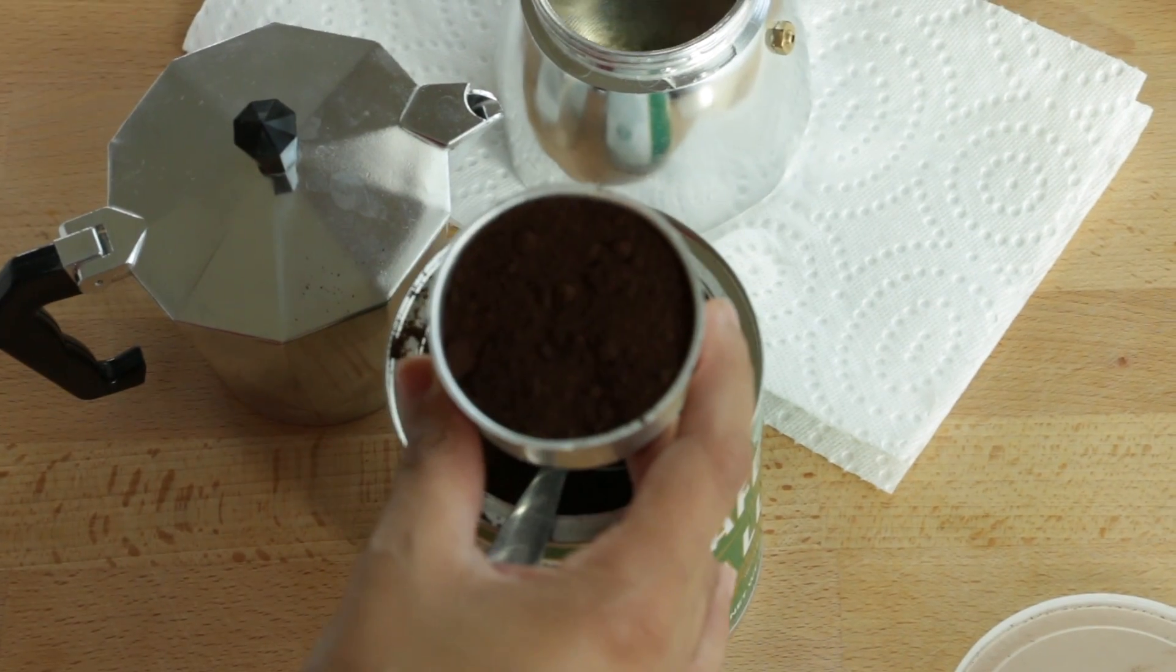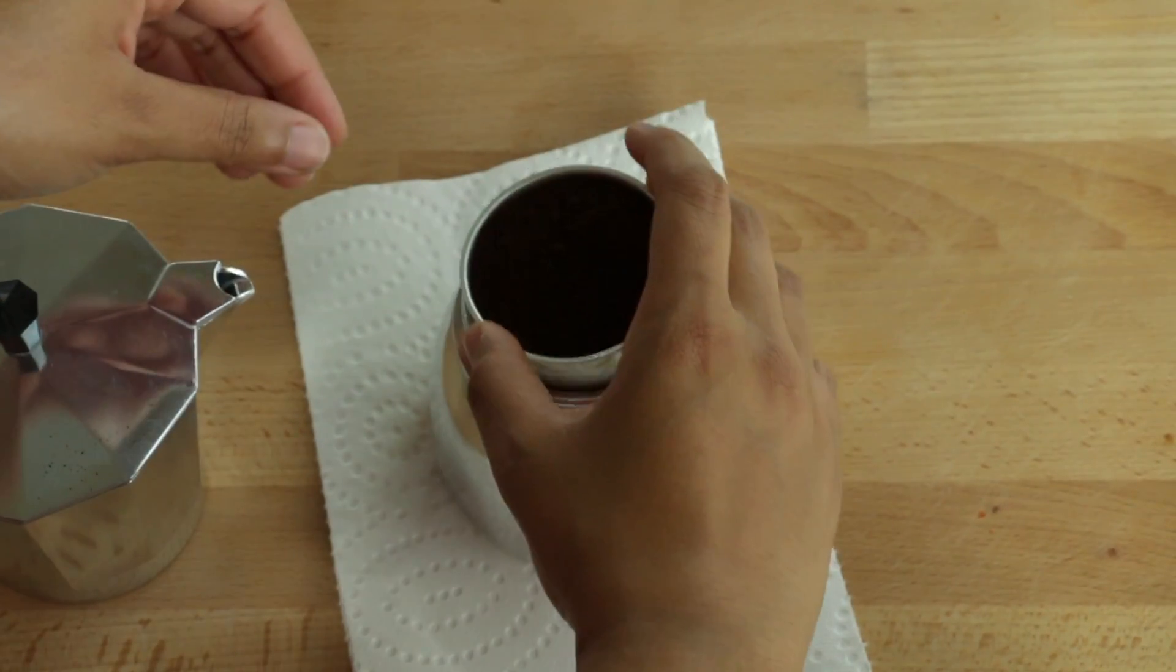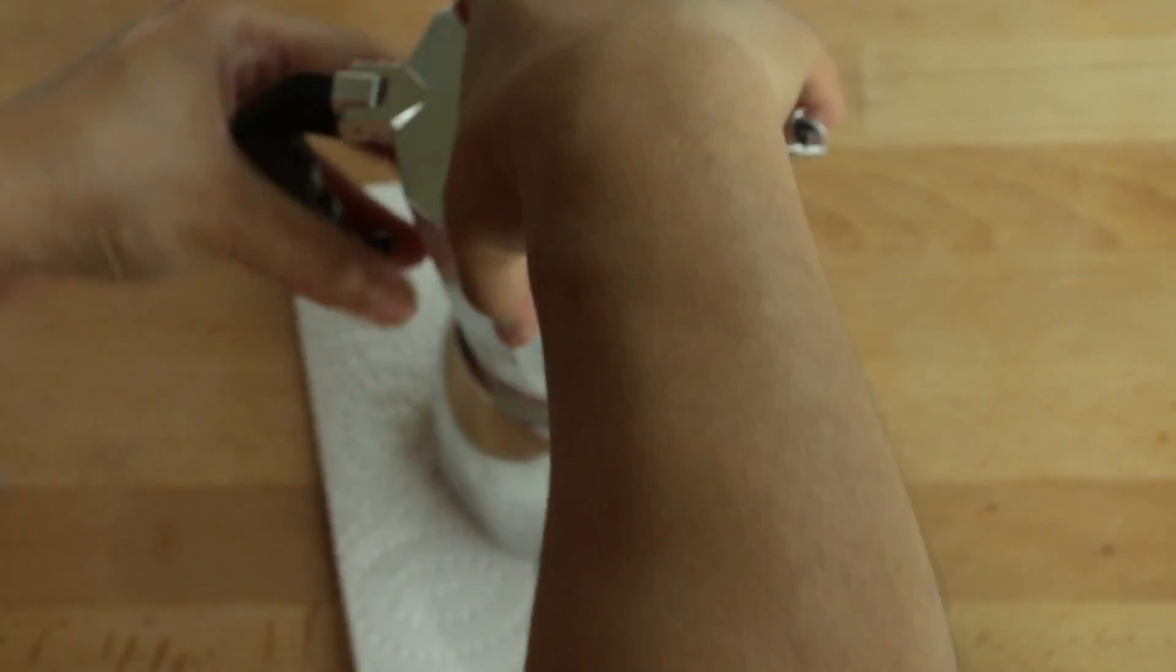Once that's done, I place my funnel into the bottom half of my moka pot and I twist on my top half.